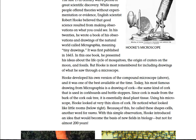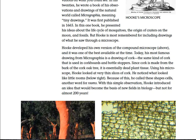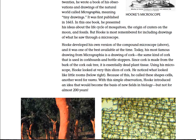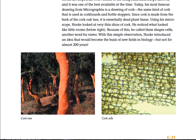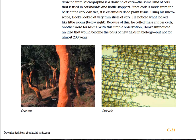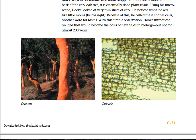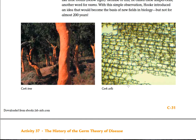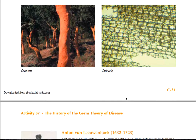Using his microscope, Hooke looked at very tiny slices of cork. He noticed what looked like little rooms. Because of this, he called these shapes cells — in other words, rooms. With this simple observation, Hooke introduced an idea that would become the basis of new fields in biology, but not for almost 200 years. Here's a picture of a cork tree, and this is a microscopic view of cork cells — this is what Hooke was looking at a long time ago.